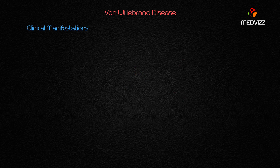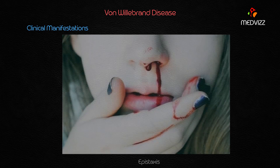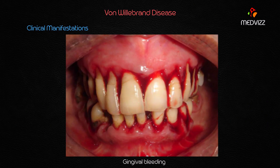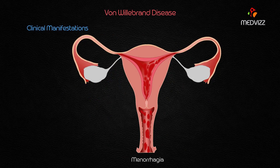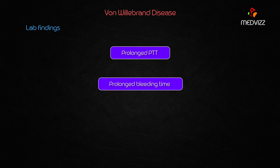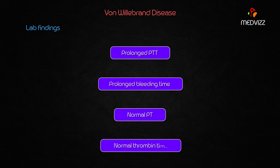Clinical manifestations include mucosal bleeding — specifically epistaxis, gingival bleeding, and menorrhagia. Mucosal bleeding is the hallmark and most evident finding in almost all cases of von Willebrand disease. Lab findings show a prolonged PTT and prolonged bleeding time, but a normal PT and normal thrombin time (TT).